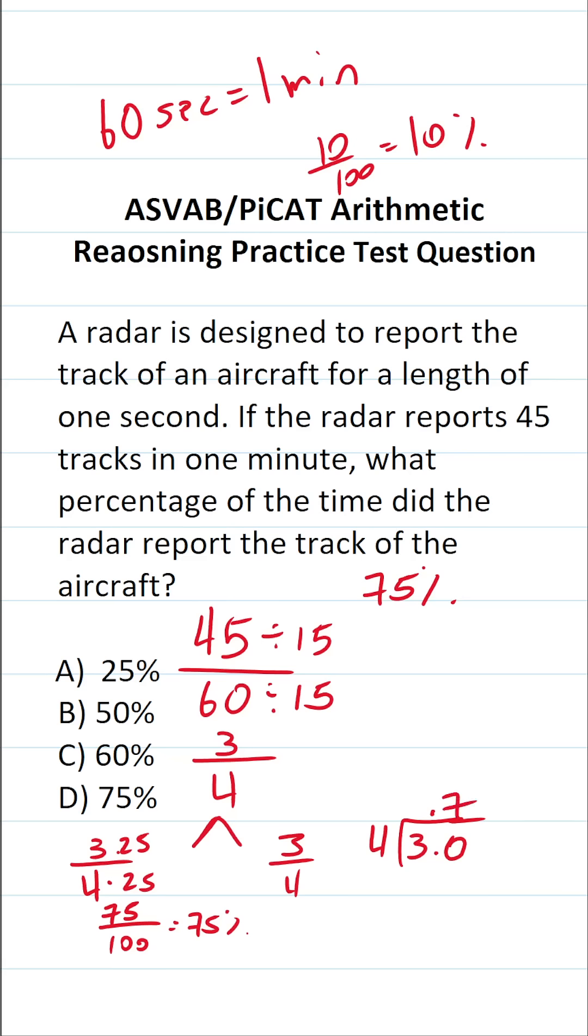How many times does 4 go into 30 without going over? It's going to be 7 times. 4 times 7 is 28. 30 minus 28 is 2. Again, we have a zero here that we can drop down. 4 times 5 is exactly 20 with no remainder.